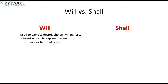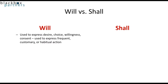Will is used to express desire, choice, willingness, consent, and is used to express frequent, customary, or habitual action. Shall is used to express a command or exhortation — what is mandatory, what is inevitable. There's a big difference between these: will is loose; shall is structured and strict.